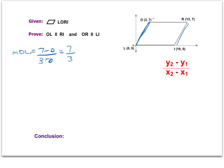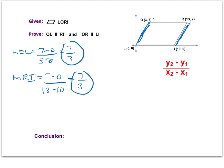Now I'm going to find the slope of that opposite side, the slope of RI. The y values are 7 minus 0 on top, and the x values on the bottom are 13 minus 10. We get 7 on top and 3 on the bottom — so the slope of RI is also 7 thirds. These two slopes are the same, which is what we're trying to prove: that OL is parallel to RI. We showed that those two sides have the same slope and therefore are parallel.